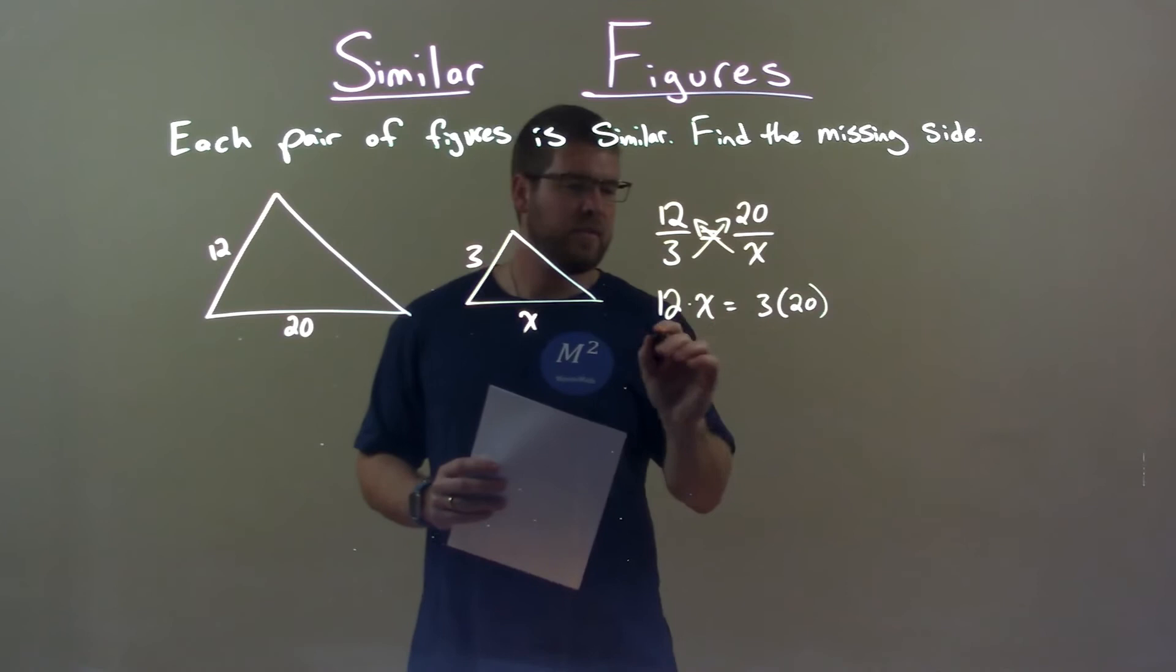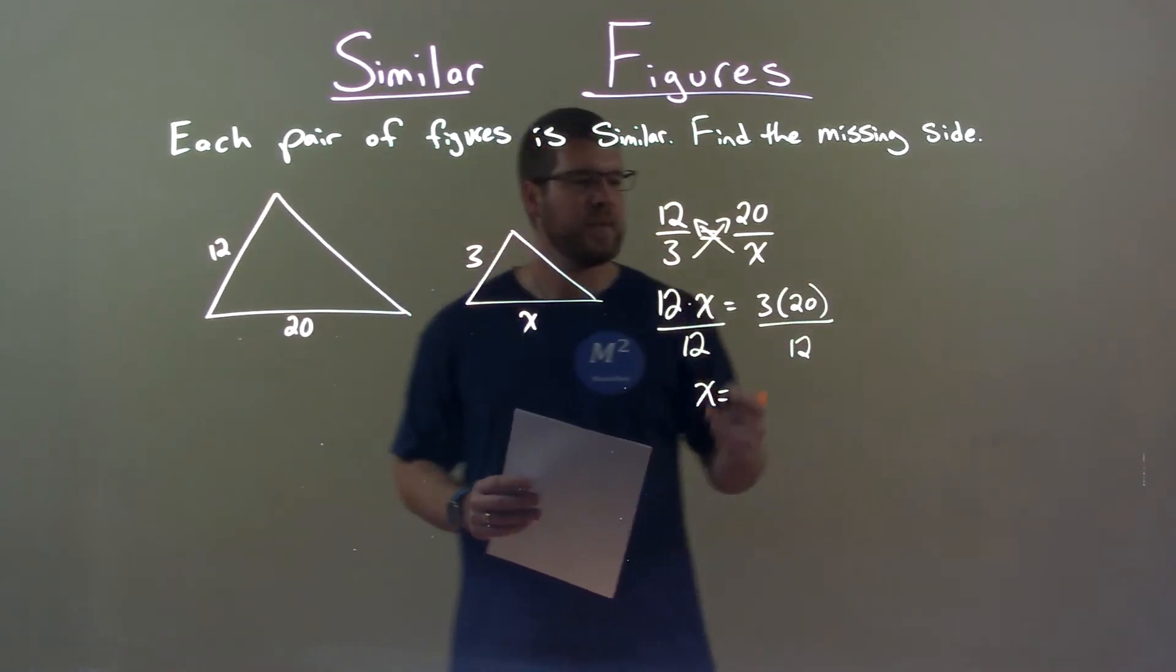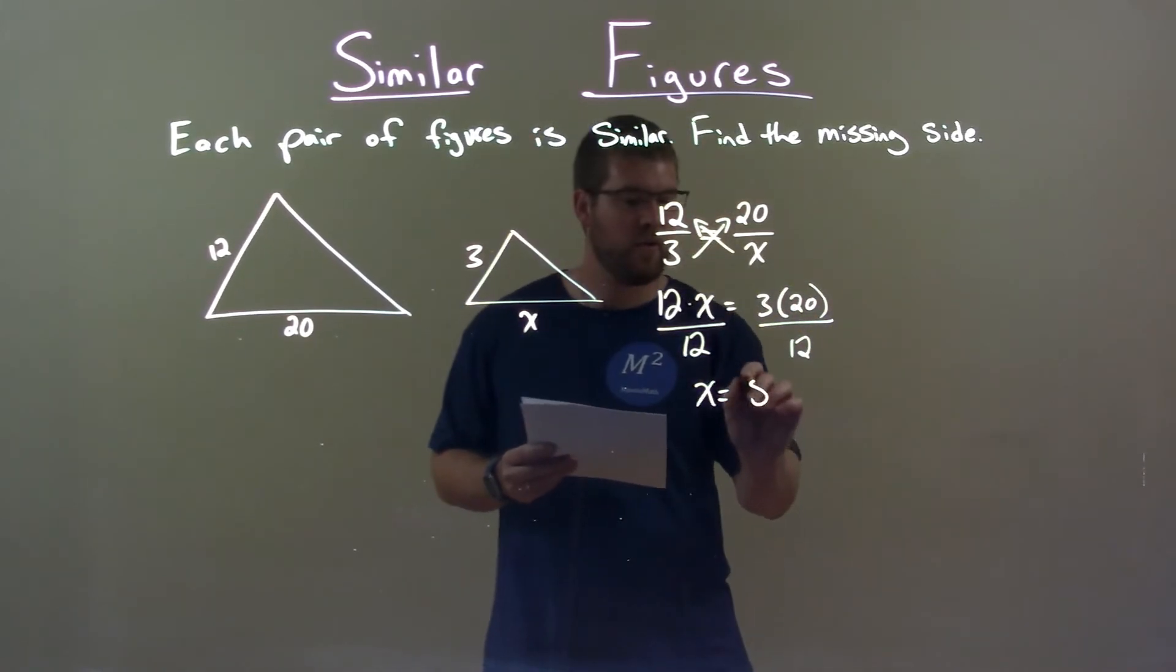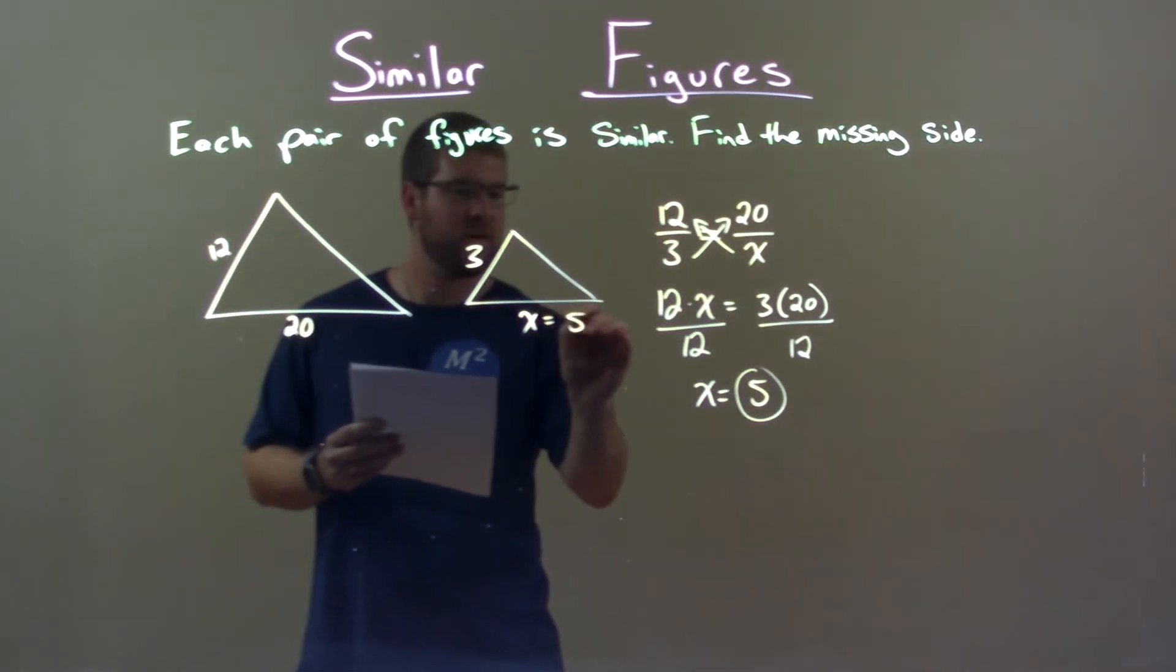To get x by itself, we divide both sides by 12. This gives me x here by itself, and 3 times 20 divided by 12 comes out to be 5. So our value for that x value here is just 5.